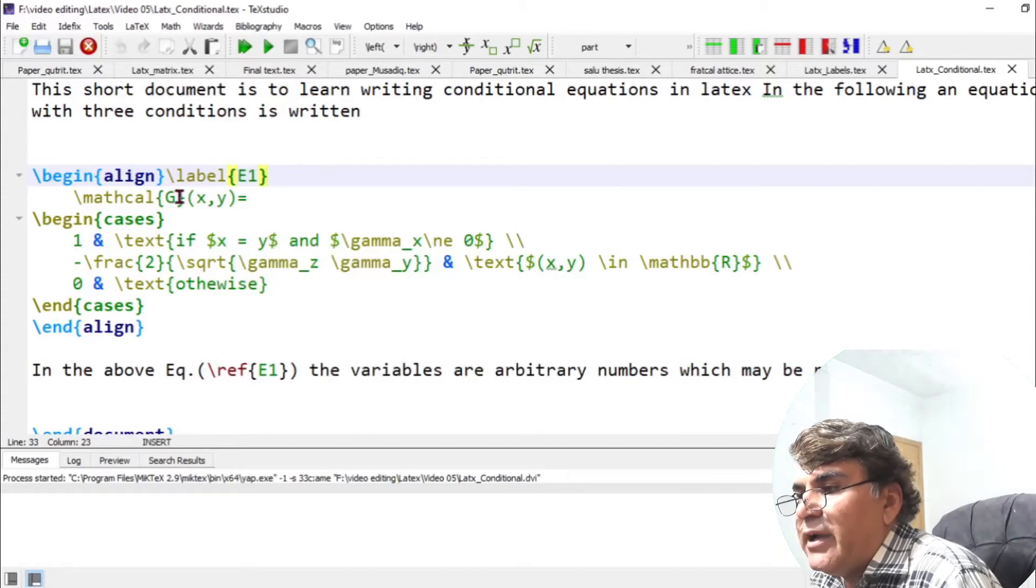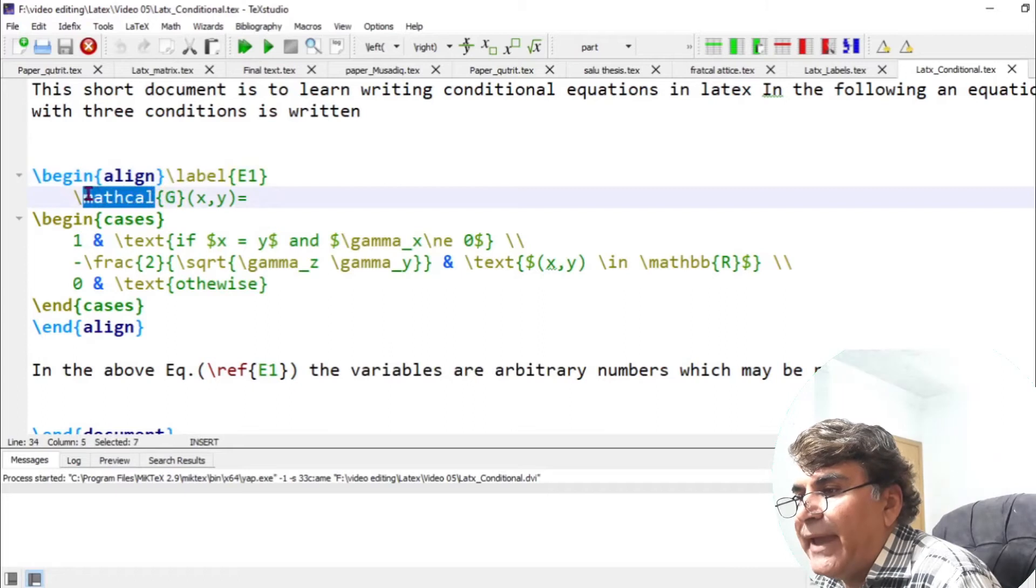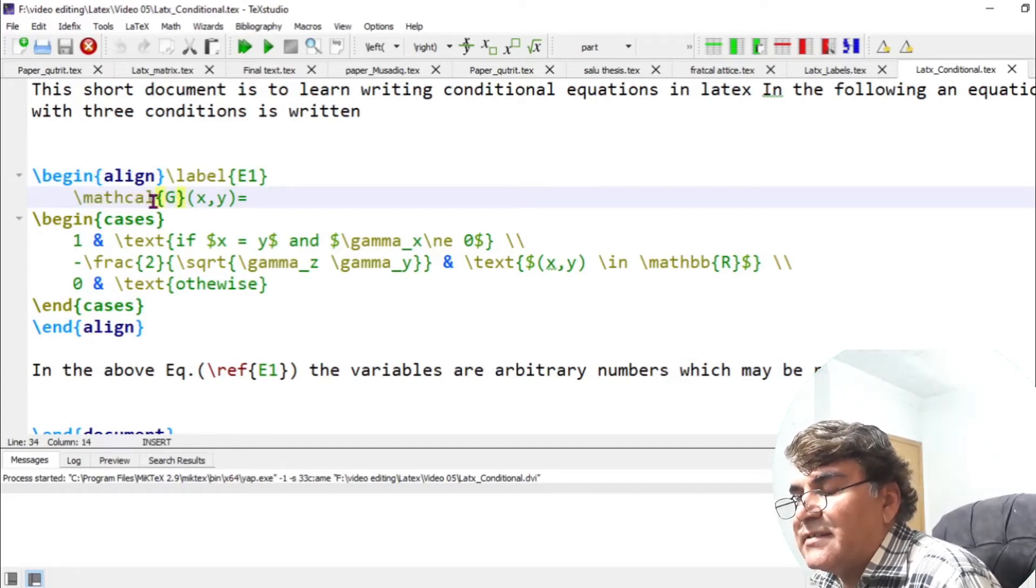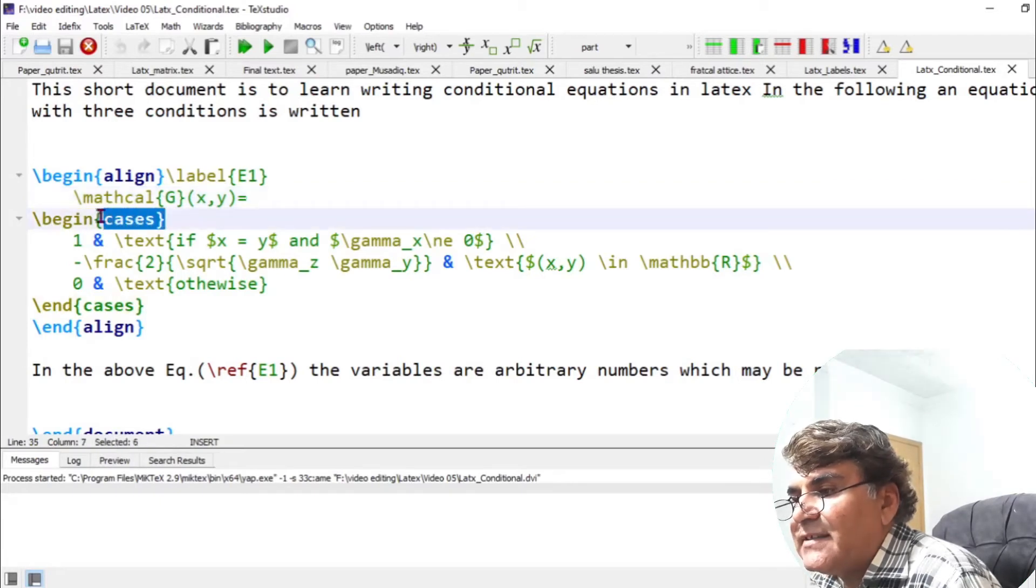Additionally, if you look at here, I have written G inside a special command mathcal. It is in fact a command used for math calligraphy, which is used for introducing different symbols, special symbols inside an equation. Then I add begin cases. It is in fact this command that produces conditional statements.